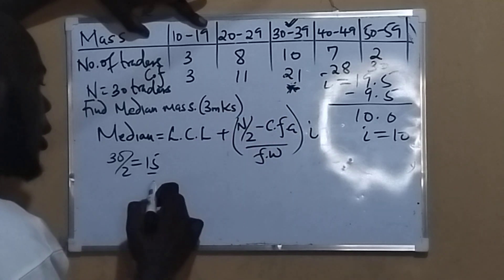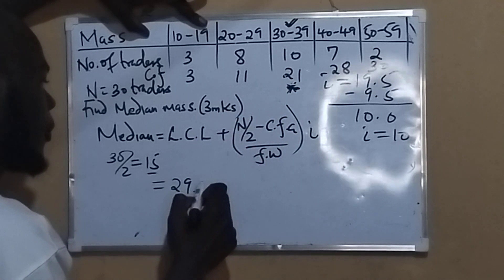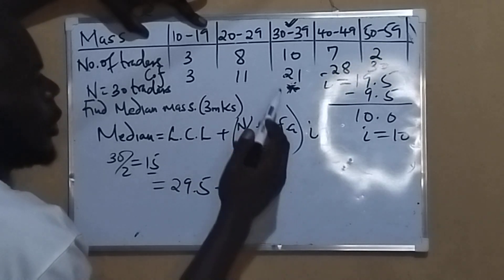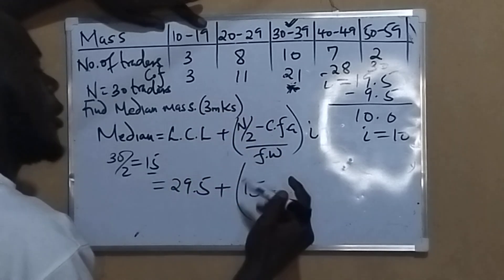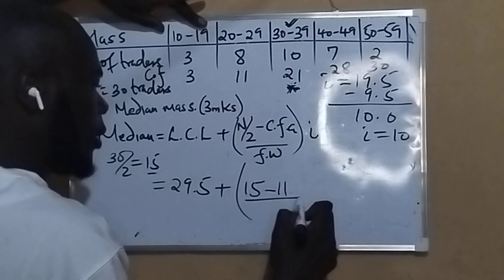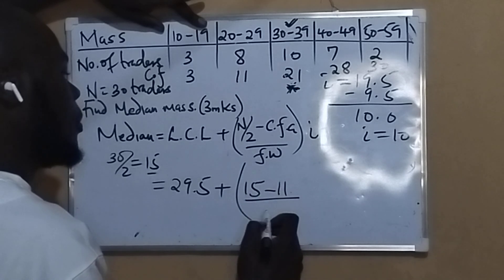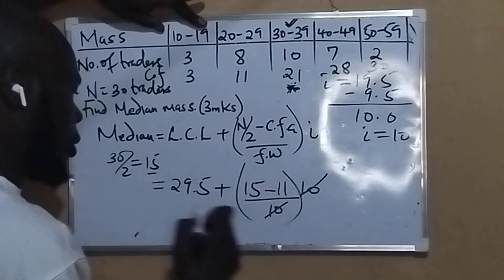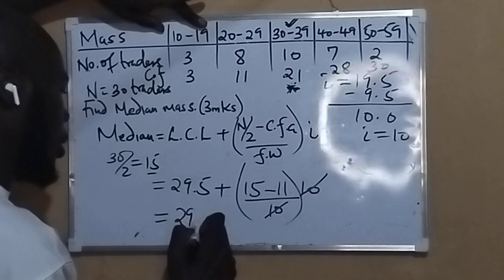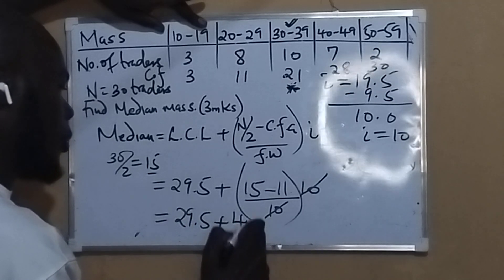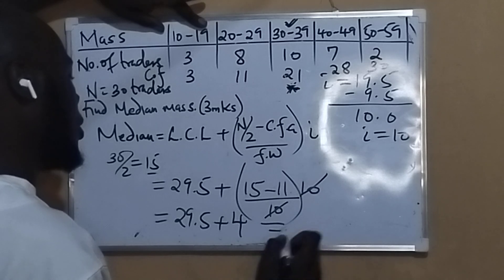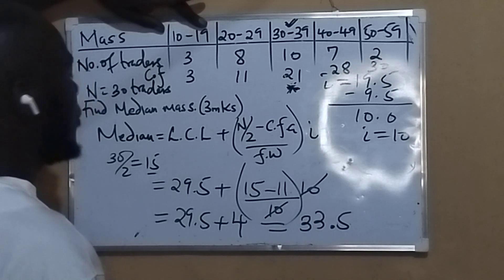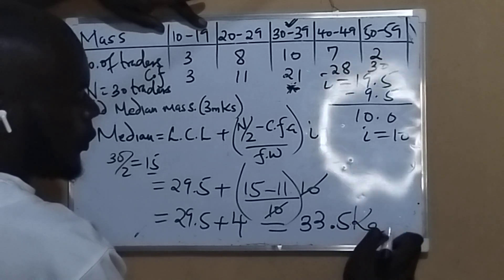The lowest class limit here is 29.5, plus n over 2 which is 15, minus the cumulative frequency above which is 11, divided by the frequency within that class which is 10, times the class interval which is 10. The 10s cancel, so you have 29.5 plus 4, giving an answer of 33.5 kilograms.